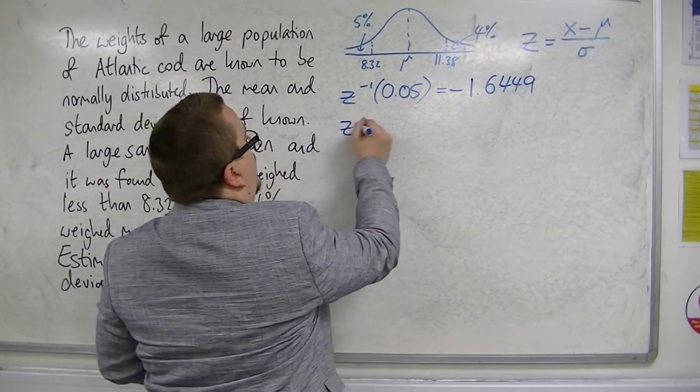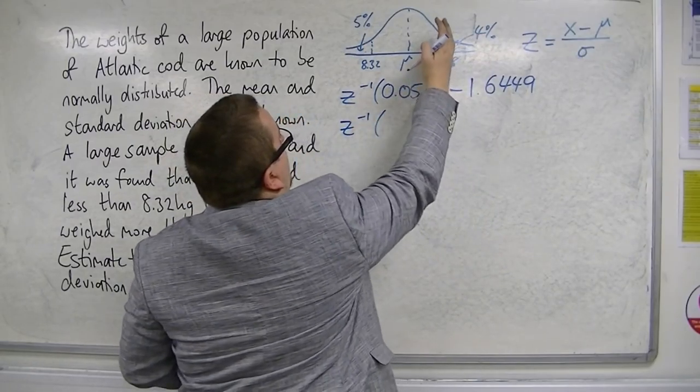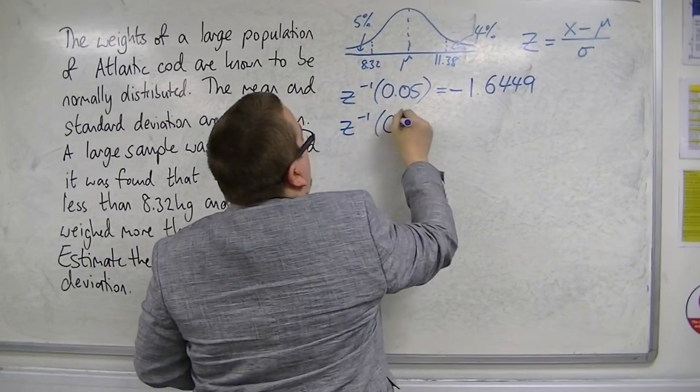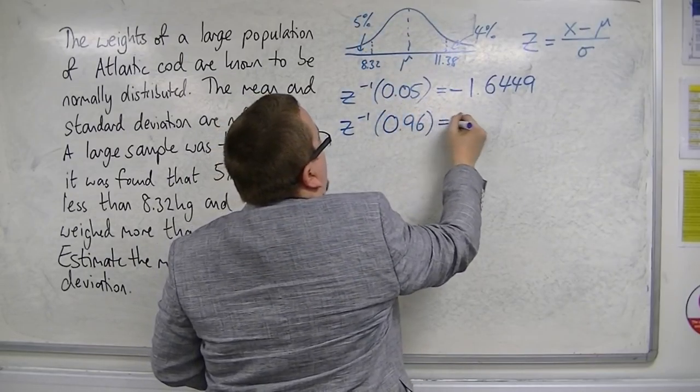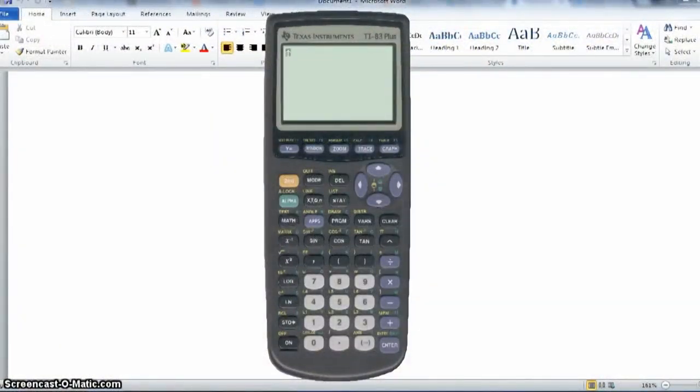And we're going to do the inverse norm of the 4%, but we're going to do 0.96, because it's always looking to the left. So, I'll show you how to do that now. We want to find the top 4%, so in order to do that, we are going to find the bottom 96%, so we're going to do the inverse norm of 0.96. We're going to go into second, then VARS for distributions.